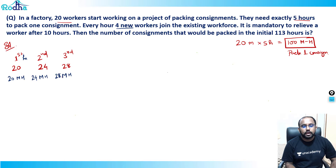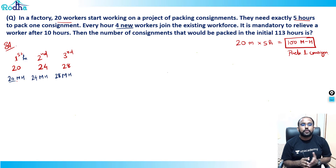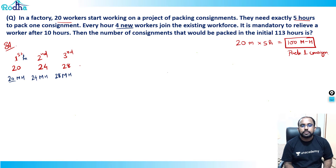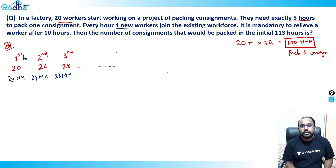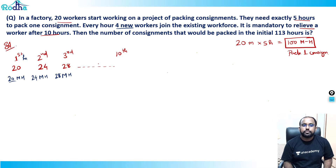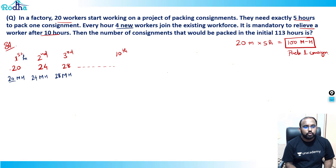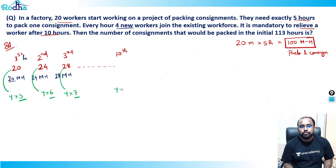So the pattern is: 20, 24, 28 man-hours per hour. This is an arithmetic progression starting from 4×5, then 4×6, 4×7, and so on. The 10th term will be 4×14, because starting from 5, the 10th term lands at 14.